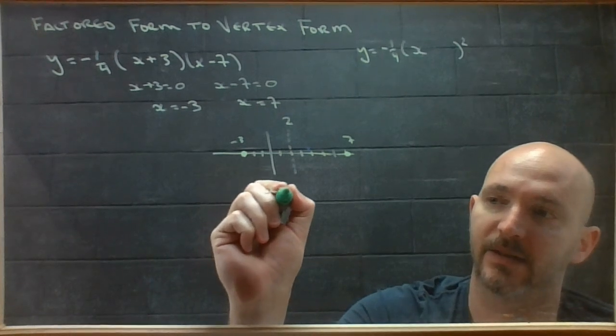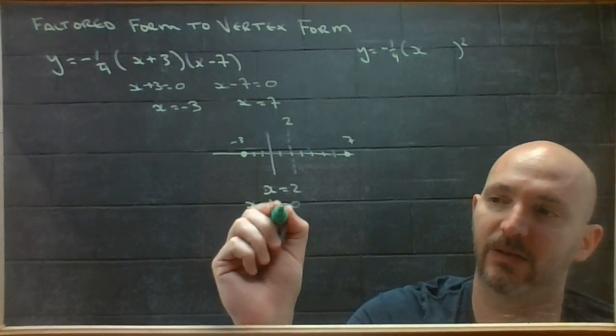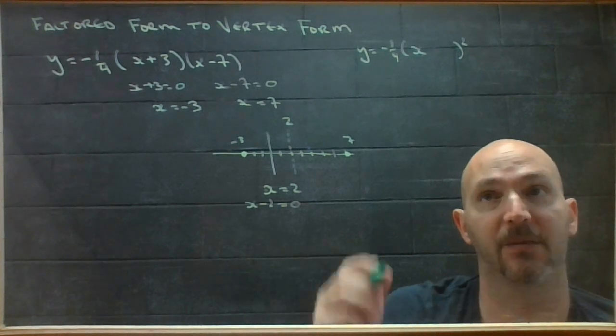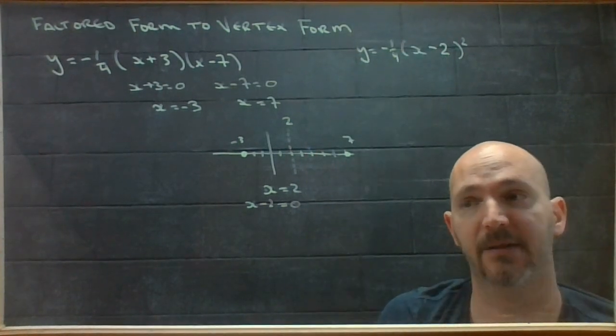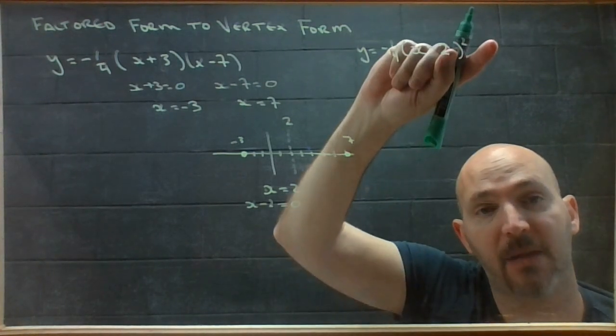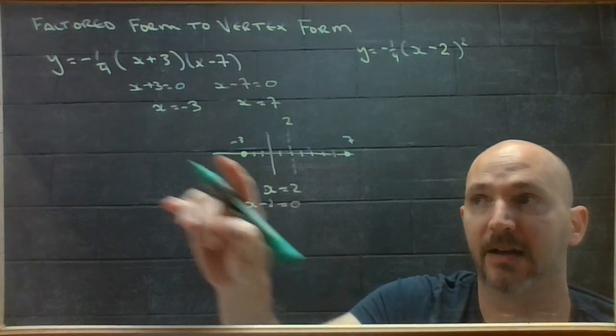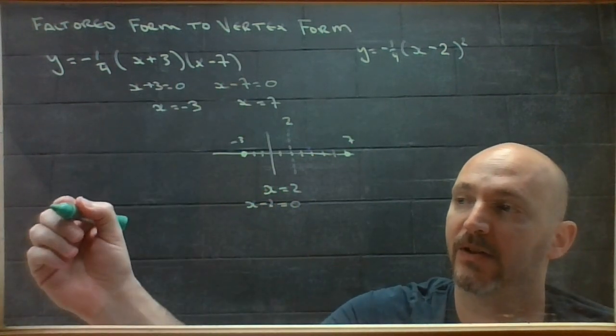So, x is 2 on the line of symmetry. That means x minus 2 will equal 0 on the line of symmetry. So, there's my pod. And to get this number at the back, the max min value of the parabola, I'm just going to have to park my x value into this equation and evaluate.